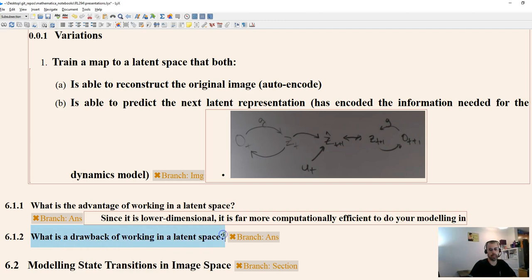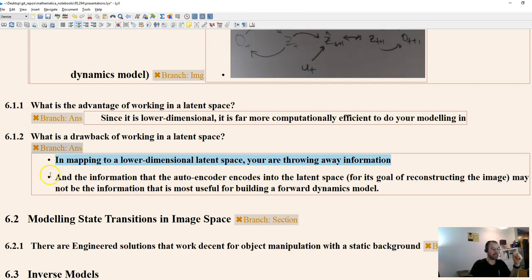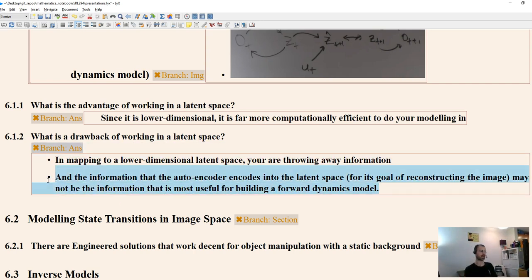So what is a drawback of working in a latent space? Well, inevitably, when you map to a lower-dimensional space, you're going to be throwing away some information. And so the autoencoder is trying to reconstruct the image. So it's got some L-squared loss in pixel space. And so that's the autoencoder's task. Whereas we want to use the information to model forward dynamics, which is a different task. And so you get some inevitable loss of performance when you train something for one task and you want to do a different task. So that's the issue, basically.